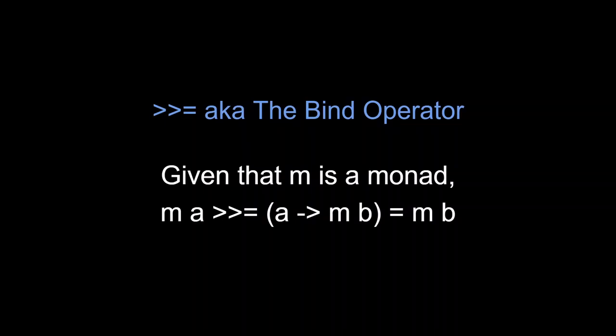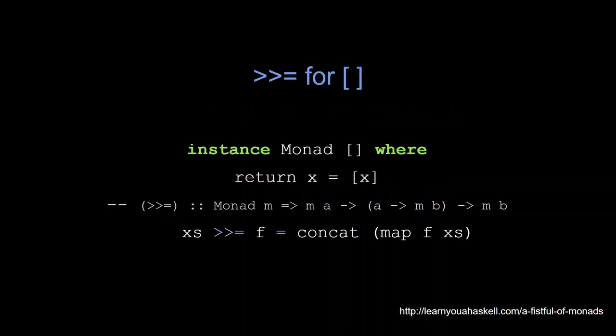The bind operator takes the values wrapped up in some monadic context and binds them with the function which can transform those values to some other values wrapped up in the same monadic context. Let's look at how this bind operation works on lists. We can use bind operation on any list with a function that takes any element of the list and produces another list. The monadic bind operation maps this function over all the elements of the list and concatenates all the resulting values in the single list.